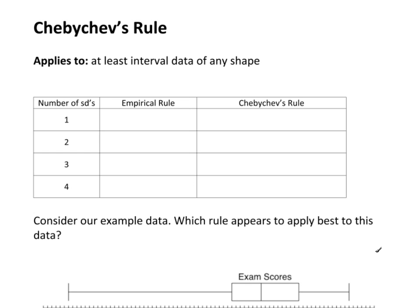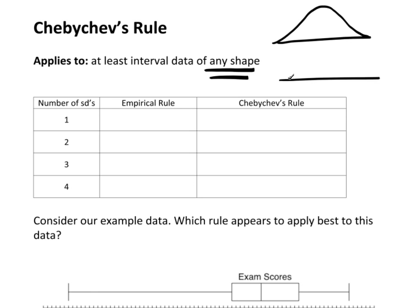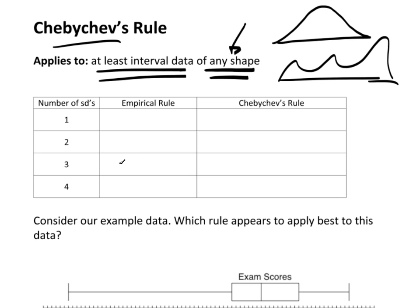Another common rule to use is Chebyshev's rule. Chebyshev's rule is very much like the empirical rule, but the big difference is that Chebyshev applies to any shape of data. The empirical rule specifically needed mound-shaped data. If your data looks reasonably mound-shaped, use the empirical rule. But if your data is skewed or has a weird shape, definitely use Chebyshev's rule because it applies to any shape. We also need at least interval data.